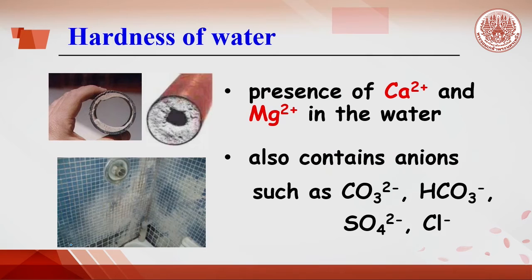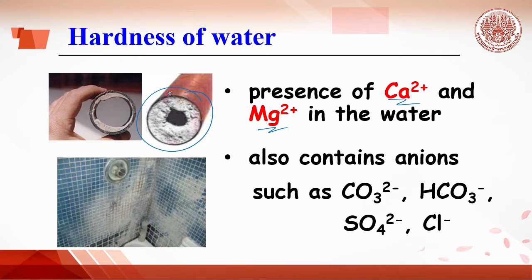Hardness of water is due to the presence of calcium or magnesium ions in water. In real life, we might see hard water in the form of water pipes or poor lathering of soap and scum. Hard water also contains anions — for example, carbonate ions, bicarbonate ions, sulfate ions, or chloride ions. From these ions, hardness can be classified into two categories.